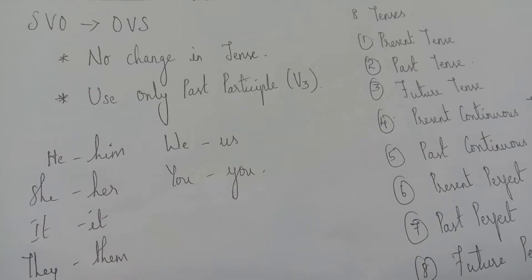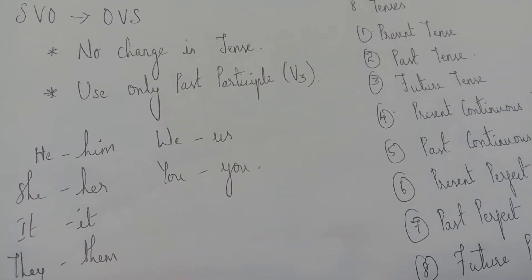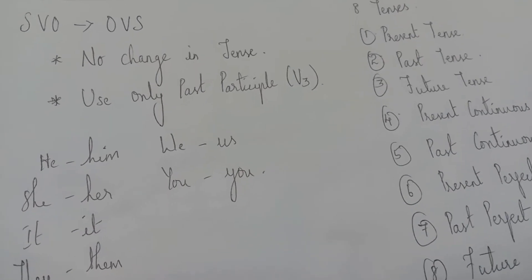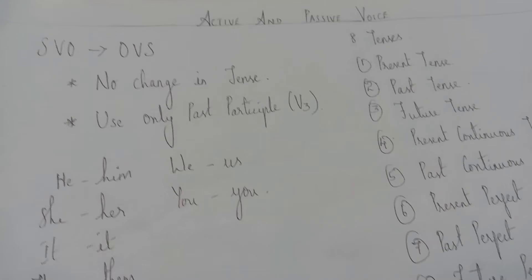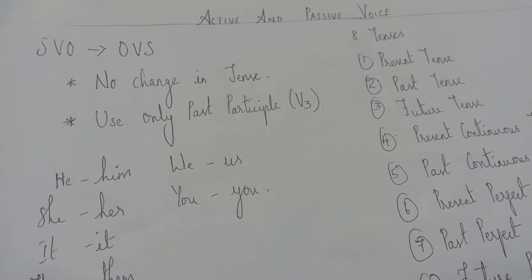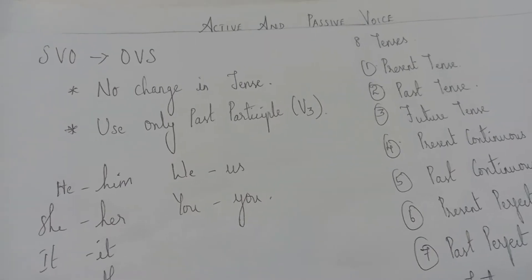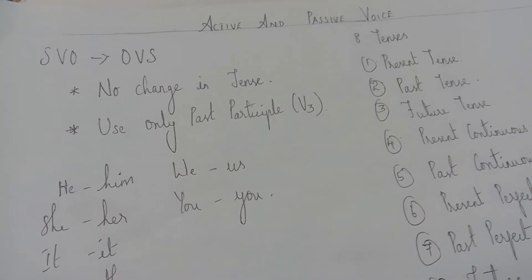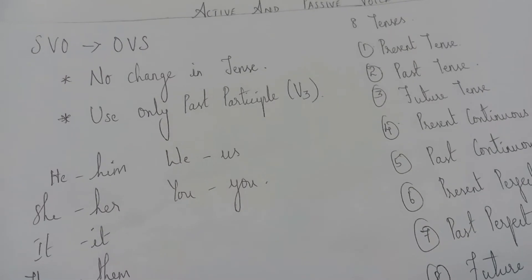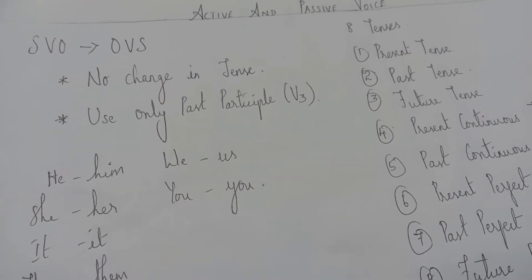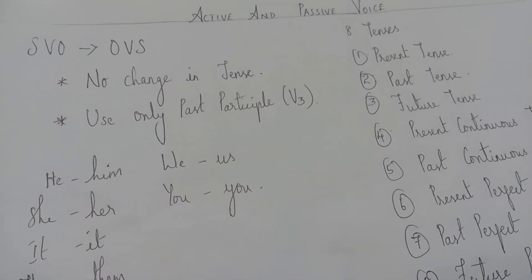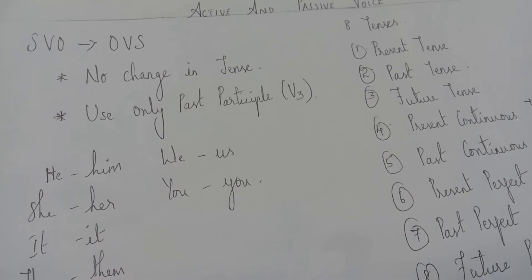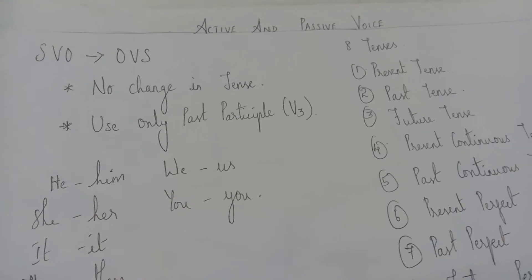Now, SVO. What is SVO? SVO means subject, verb, object. S stands for subject, V for verb, and O for object. SVO in active voice becomes OVS in passive voice.